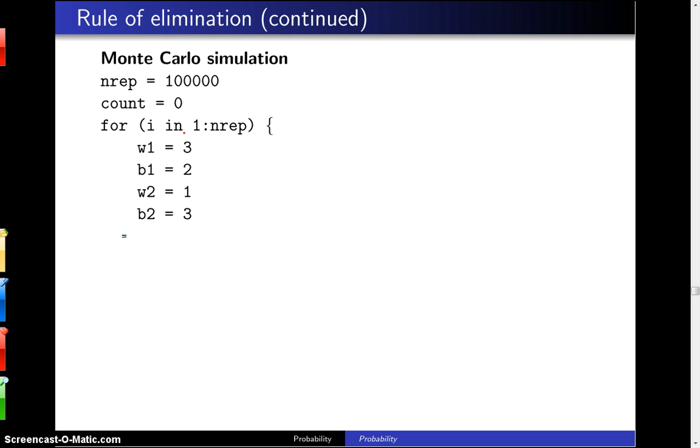So the way we do that is we say, if runif(1), and runif(1) represents a uniform 0,1. If that uniform 0,1 is less than 2 fifths, if the random number is less than 2 fifths, well, that's the probability of drawing a black ball from the first urn. So if that is the case, then we want to increase the number of black balls in the second urn by 1.